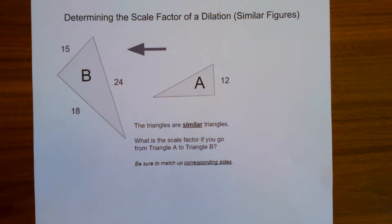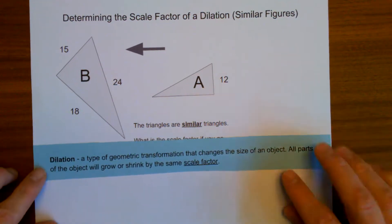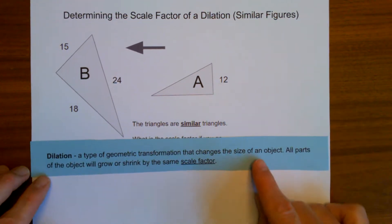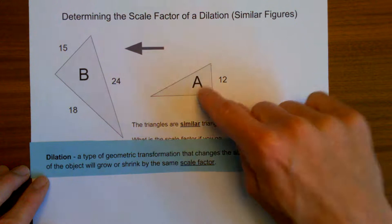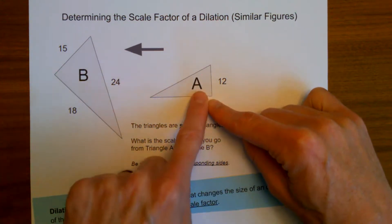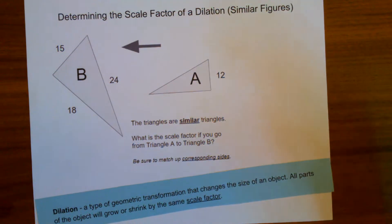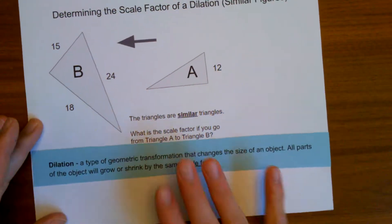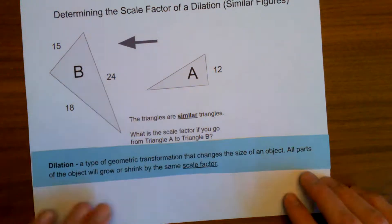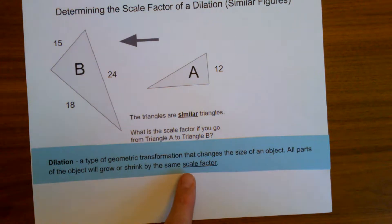First, we need to establish what actually is a dilation. A dilation is a type of geometric transformation that changes the size of an object. We're going from triangle A to triangle B, and it looks like the shape is growing in this case — that is a dilation. In addition to a change in size, all parts of the object will grow or shrink by the same scale factor.